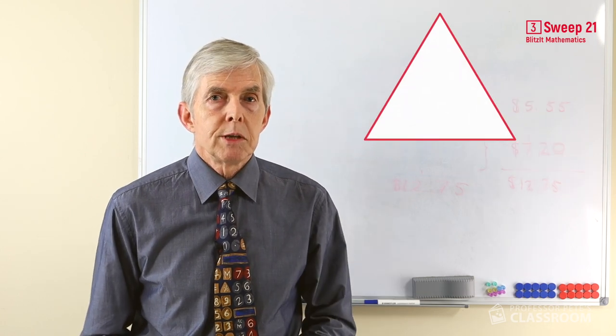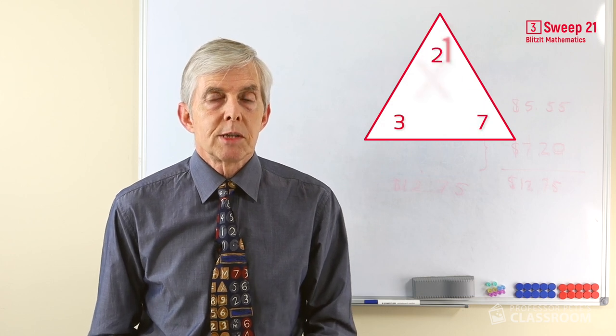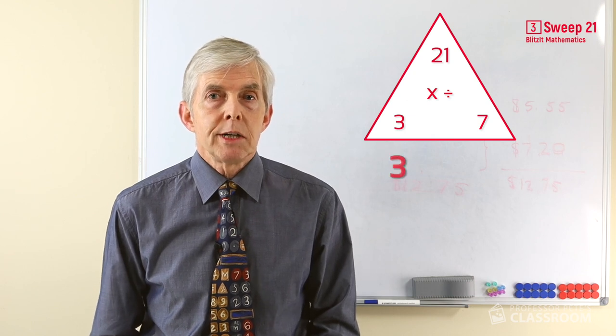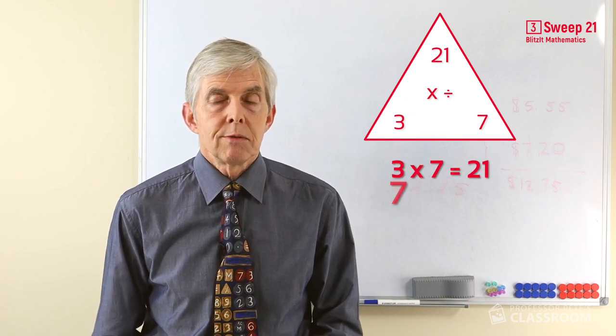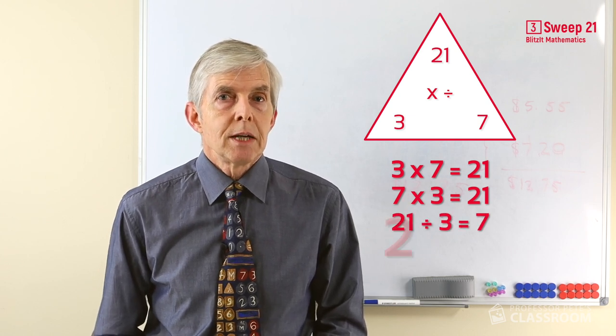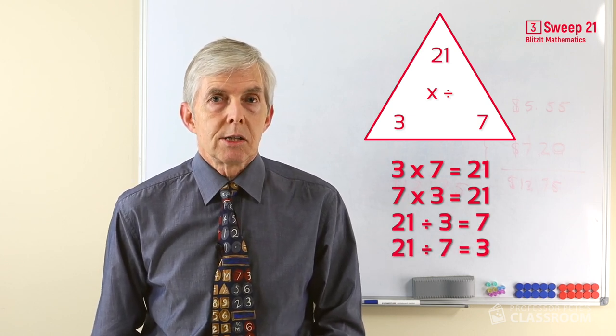Like this one for example, which is a number fact family for 3 times 7 equals 21. And looking at the triangle we can come up with the facts: 3 times 7 is 21, 7 times 3 is 21, 21 divided by 3 is 7, and 21 divided by 7 is 3.